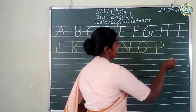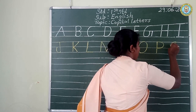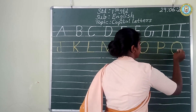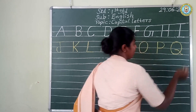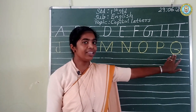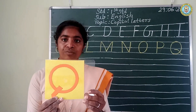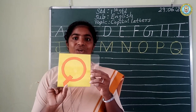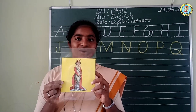Next letter. Big round and the small line. Q. Repeat after me. Q. Q for queen. Q for queen.